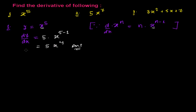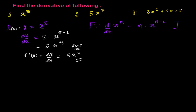Finally, we get 5x to the power 4. That's the derivative of this function. So dy/dx equals 5x⁴. If written as f prime of x, it is the same thing — don't be confused. Now let's do the second one.